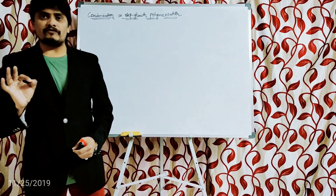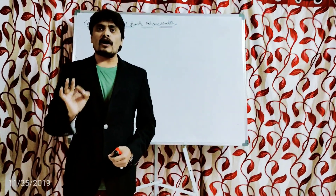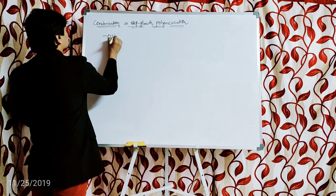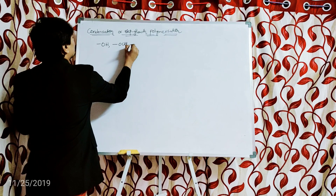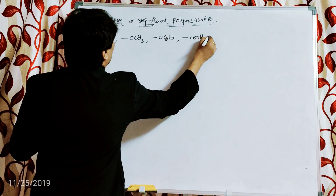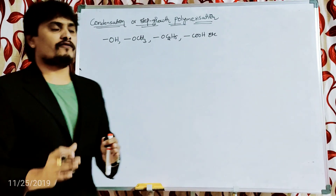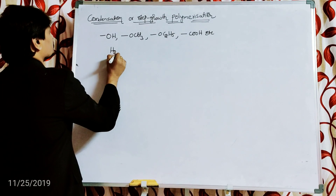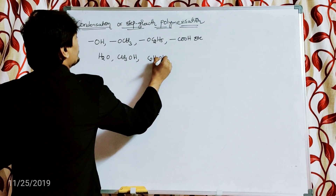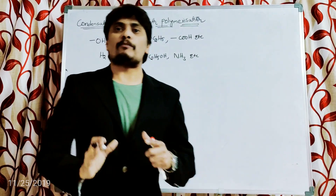So this polymerization involves the repeated combination of monomeric units containing polar functional groups such as hydroxy, methoxy, ethoxy, carboxy, etc., resulting in the formation of a condensed polymer with the elimination of small molecules like water, methanol, ethanol, ammonia, etc. This is the definition of condensation or step growth polymerization.